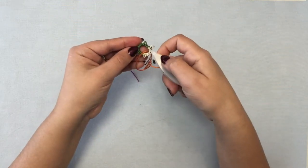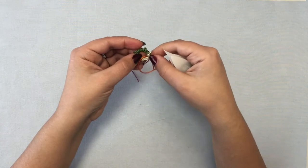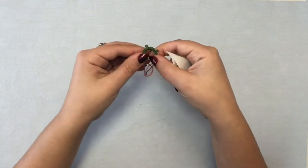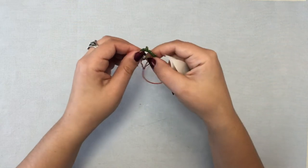But essentially the idea is that in order to open this ring we want to get this thread here at our start stitch pulled through to reopen.